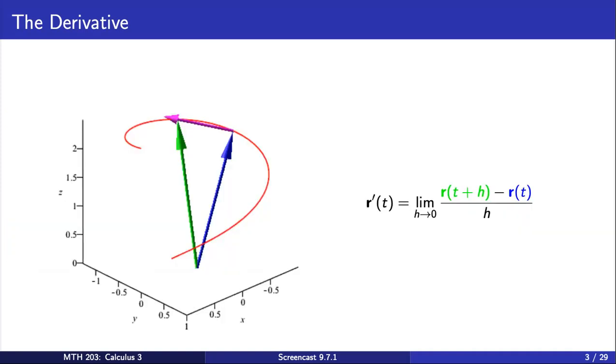Let's look at a picture. Here we have two vectors, r of t plus h in green and r of t in blue. The quotient in the limit gives us the average rate of change of the function r on the interval from t to t plus h. This is denoted by the pink vector in the picture.